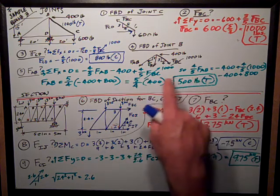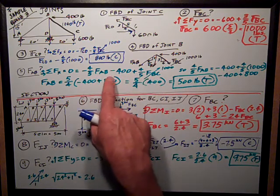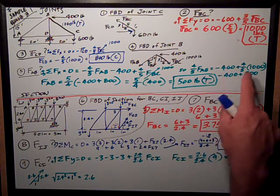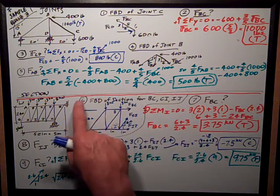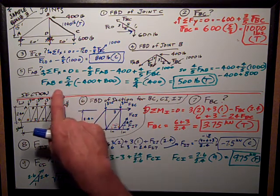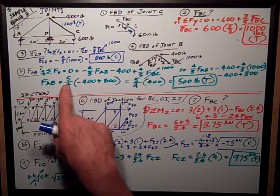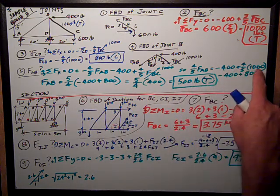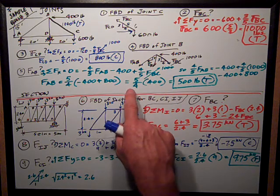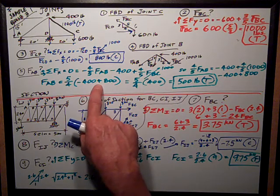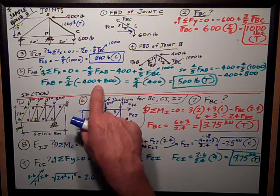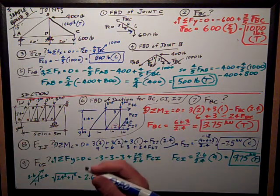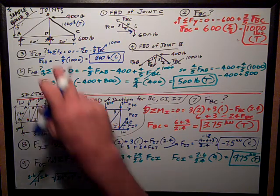Rearranging this equation a little bit, I can take this negative four-fifths FAB to the other side of the equal sign and get four-fifths FAB is equal to minus 400 pounds plus four-fifths of 1,000 pounds. Continuing to combine terms, I can say FAB, the force in FAB, is equal to five-fourths, where I've taken that and inverted it, multiplied by negative 400 plus four-fifths of 1,000, or 800, which equals five-fourths of 400 pounds, keeping religious track of my positives and negatives. That's equal to 500 pounds tension. So if I was going to continue solving it, I would write that on my big diagram.